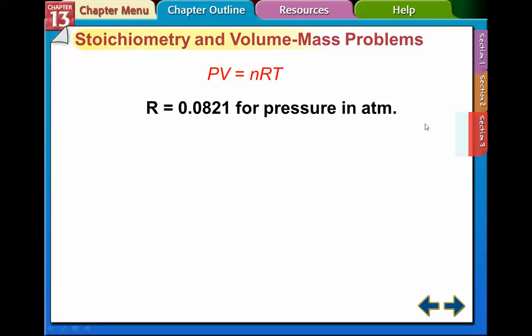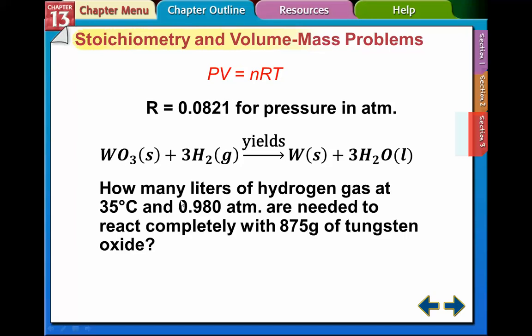So we have a problem like this where we have tungsten oxide, WO3 (tungsten oxide), combined with hydrogen gas yields tungsten metal (that's what they use in light filaments) and water liquid.